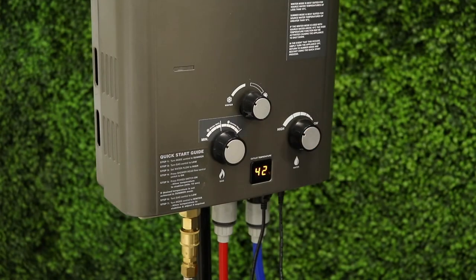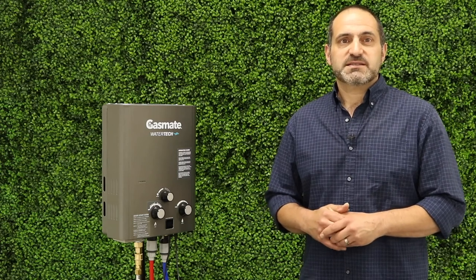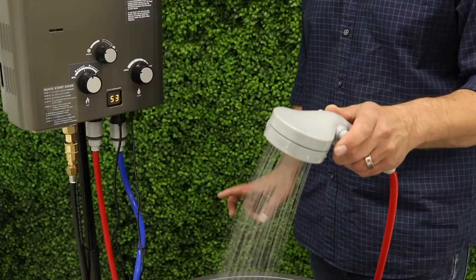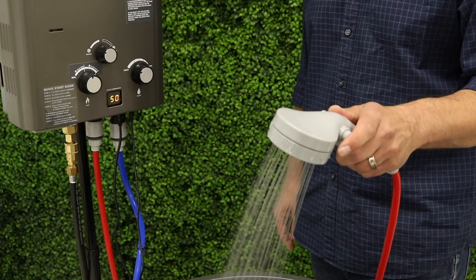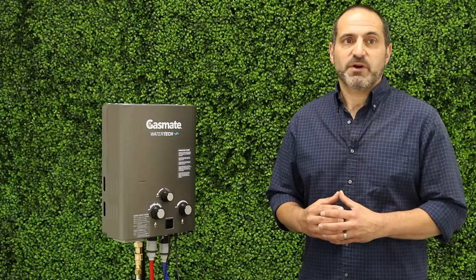The unit is also fitted with a safety shut off device if the water becomes too hot. This is set at 50 degrees. If the water temperature rises above 50 degrees the burner will shut off. Water will continue to flow as the pump is still operating.